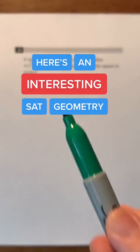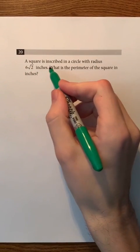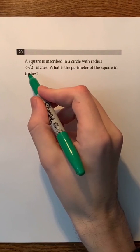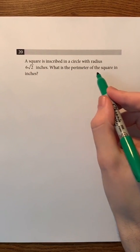Here's an interesting SAT geometry question. A square is inscribed in a circle with radius 6 times the square root of 2 inches. What is the perimeter of the square in inches?